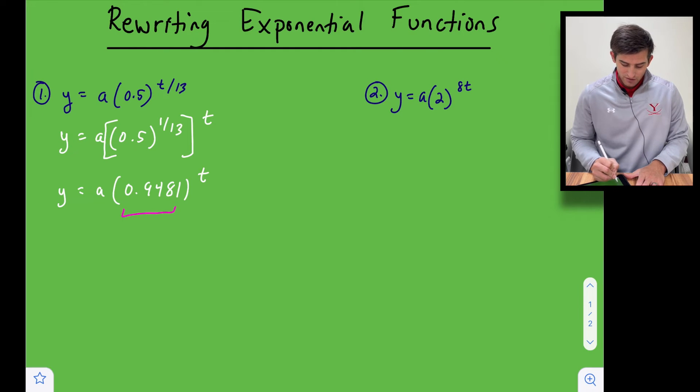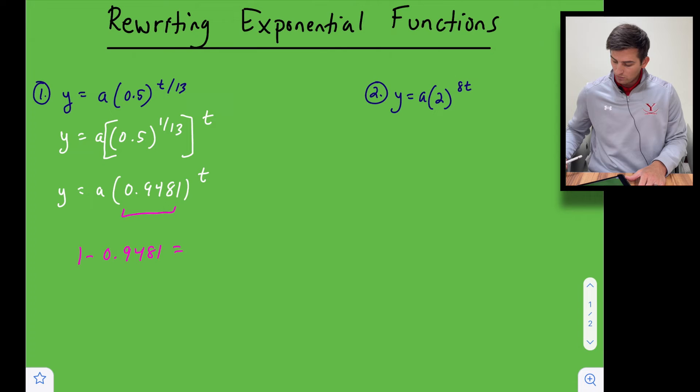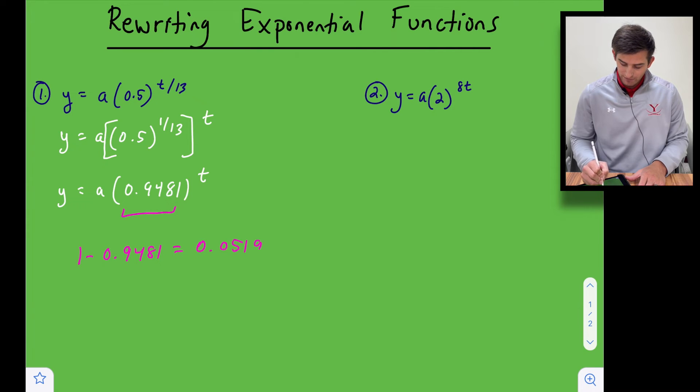So essentially to figure out what our percent decay was we could just take one minus 0.9481 and that'll give us our percent decay. Okay so one minus, I'm using my calculator here, 0.9481 and that gives me 0.0519, and now to change that to a percentage let's just multiply that by 100 and we get 5.19 percent and this would be decay.